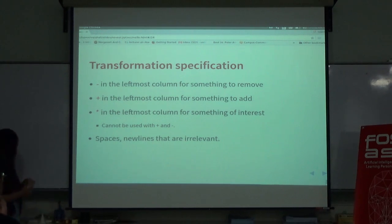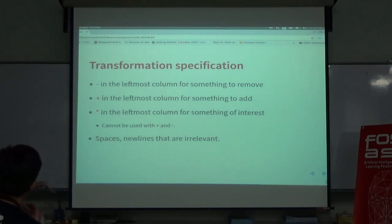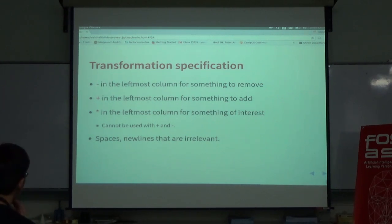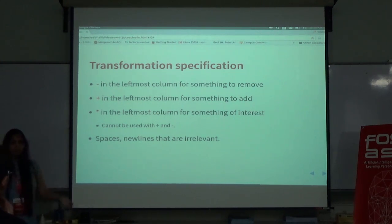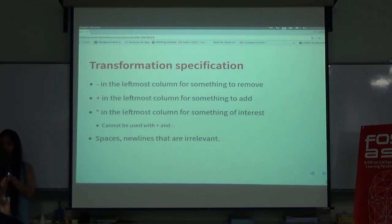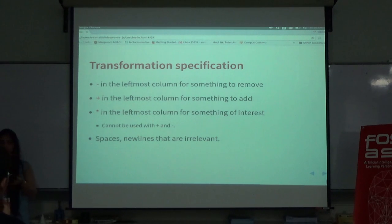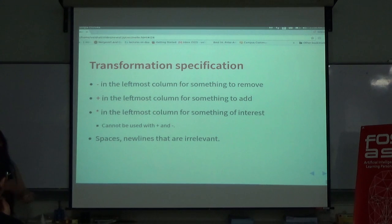Transformation specifications. In the patch we saw, minus is something which should be removed, plus is something which should be added — like in patch style. Another thing here is we have a star. It can be possible that you don't want to remove or add something; you just want to see what happens in some particular code parts and collect the list of files which have the same kind of pattern. In that case, you can put stars everywhere and have an output showing those parts of the code.